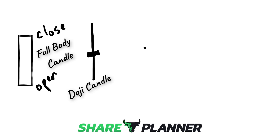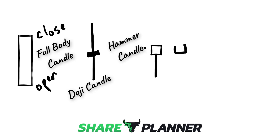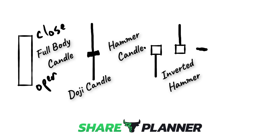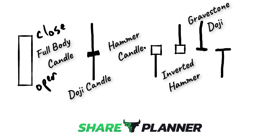You can also have candles where there is a very large shadow on one side but not the other. In this case, you have a hammer candle. You can also have an inverted hammer — that's where you have one long upper shadow. Sometimes you don't even really have a body at all — it's just one very thin line with one large upper shadow, and that would be considered a gravestone doji. Or you have your dragonfly doji — that's just a very large shadow underneath with no body.